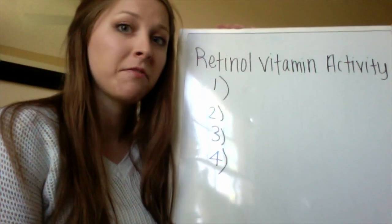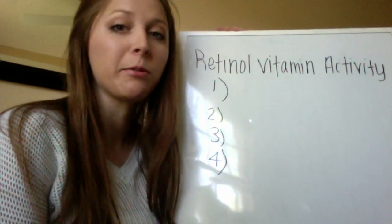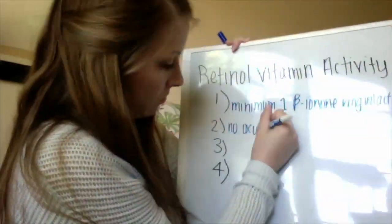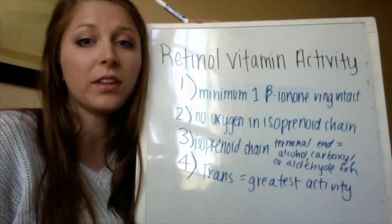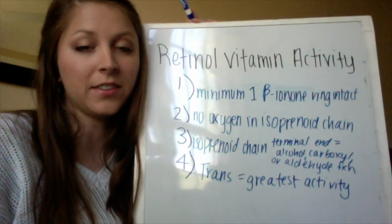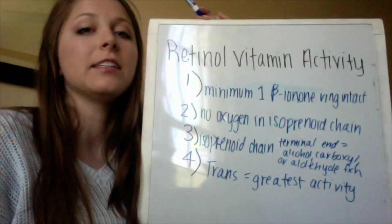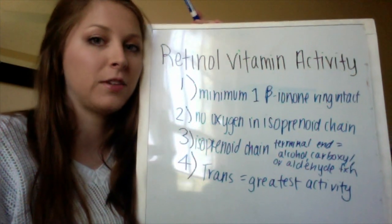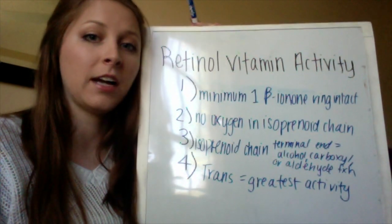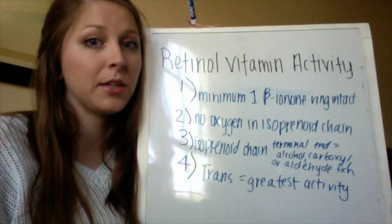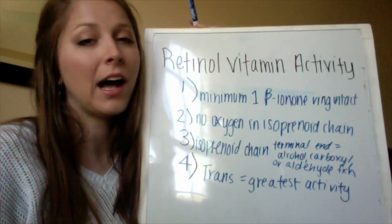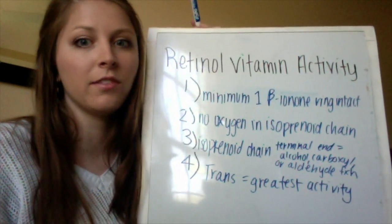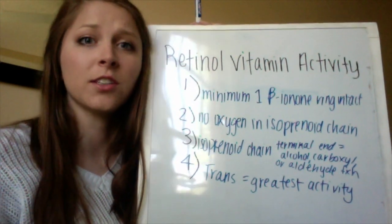In order for retinol to have vitamin activity, it requires four things. The four things are: a beta-ionone ring intact, no oxygen in the isoprenoid chain, the isoprenoid chain must have its terminal end either being carboxyl, aldehyde, or alcohol function, and trans configurations are also going to give the greatest activity for retinol.